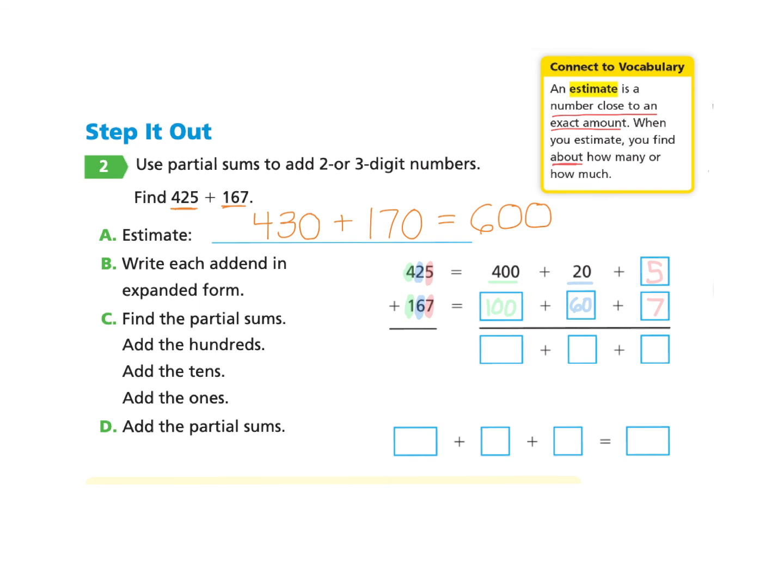Part C asks us to find the partial sums. We need to add the hundreds, the tens, and the ones. If you would like to try this on your own and come back, you're welcome to do that or follow along with me. So first we will add the hundreds. 400 plus 100 is 500. Next we will add the tens. So 20 plus 60 makes 80.